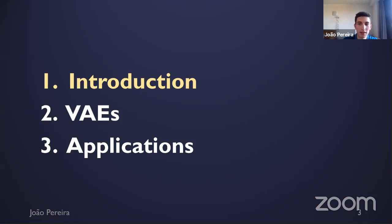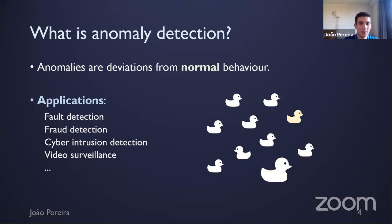We closely collaborate with external partners and have over 300 partnerships with companies, public entities, and governmental organizations. JADS is located in a former convent in the city of Den Bosch in the south of the Netherlands. I divided the presentation into three parts: first I will explain the problem at a higher level; second, I'll go into deep learning and variational autoencoders; and third, I'll explain applications of these models for anomaly detection.